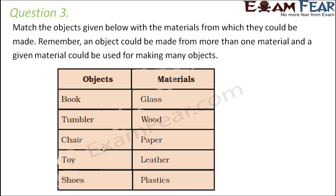Question number three: match the objects given below with the materials from which they could be made. Remember, an object could be made from more than one material, and a given material could be used for making many more objects. When you talk about a book, a book can be made up of paper. Can it be made of glass? No. Wood? No. Leather? No. Plastic? No. So a book is made up of paper.